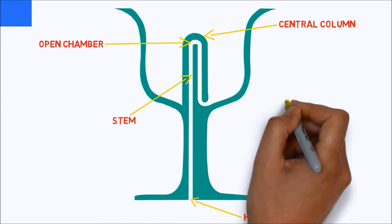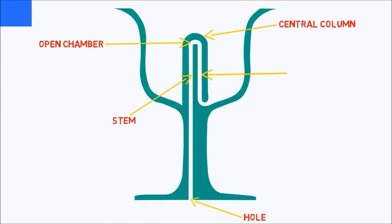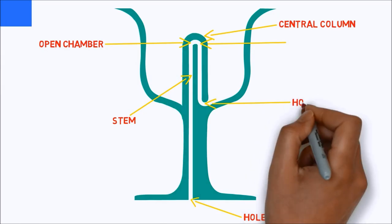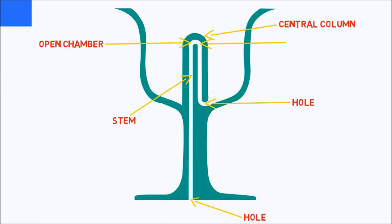The chamber is connected by a second pipe to the bottom of the central column, where a hole in the column exposes the pipe to the contents of the cup.